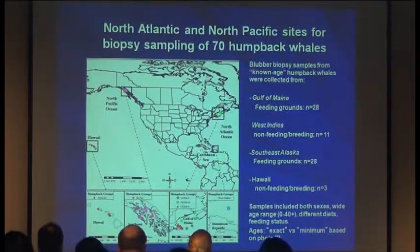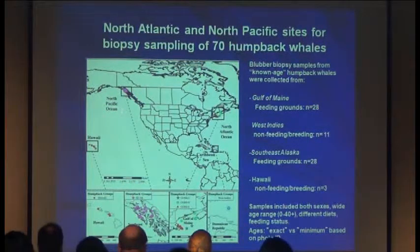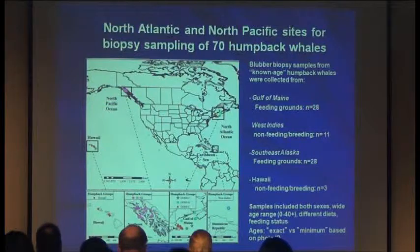The next example is humpback whales from the Gulf of Maine as well as southeast Alaska. Blubber biopsies from both known age and minimum aged whales were taken from feeding grounds as well as breeding areas in the West Indies. They feed on different prey — in the Gulf of Maine, sand lance, herring, and euphausiids are primary prey, whereas in southeast Alaska they eat krill, herring, and some other species.